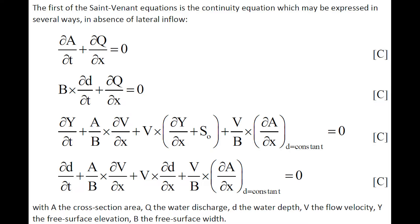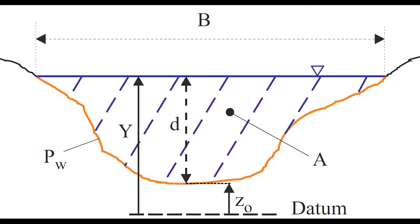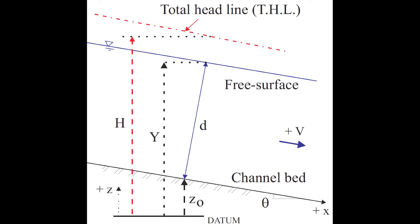In these equations, A is the cross-section area, Q is the water discharge, D is the water depth, V is the velocity, capital Y is the free surface elevation, and B is the free surface width, with the following sketches illustrating these definitions.